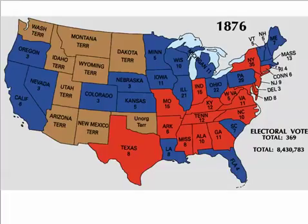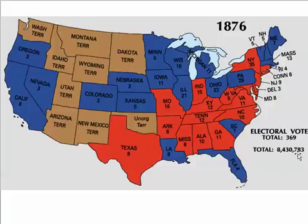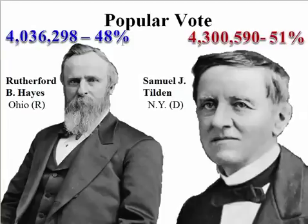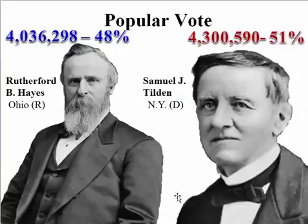In this election, the total popular vote was 8,430,783. Rutherford B. Hayes received 4,036,289 votes — 48% of the popular vote. Samuel J. Tilden, the Democrat, received 4,300,590 votes — 51% of the vote. So Tilden received a majority of the popular vote. So he becomes president, right?